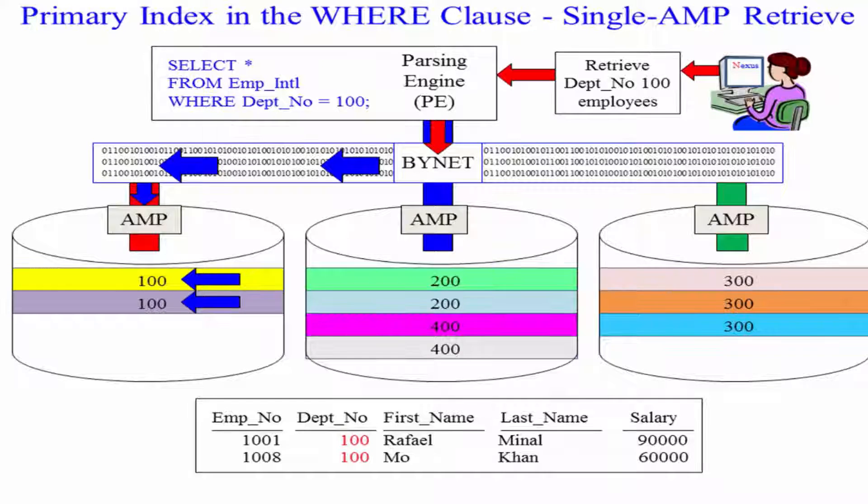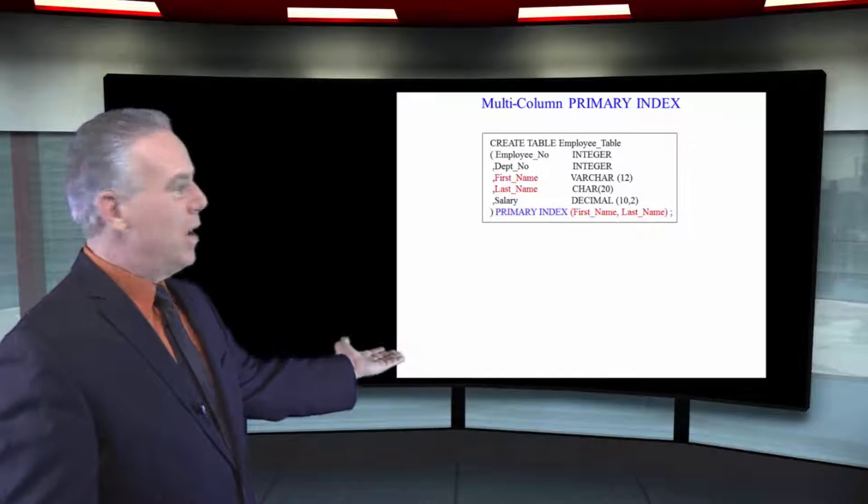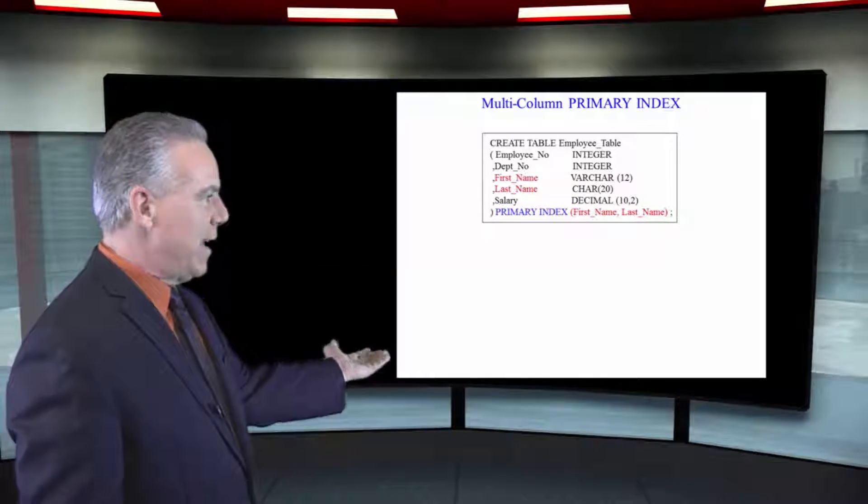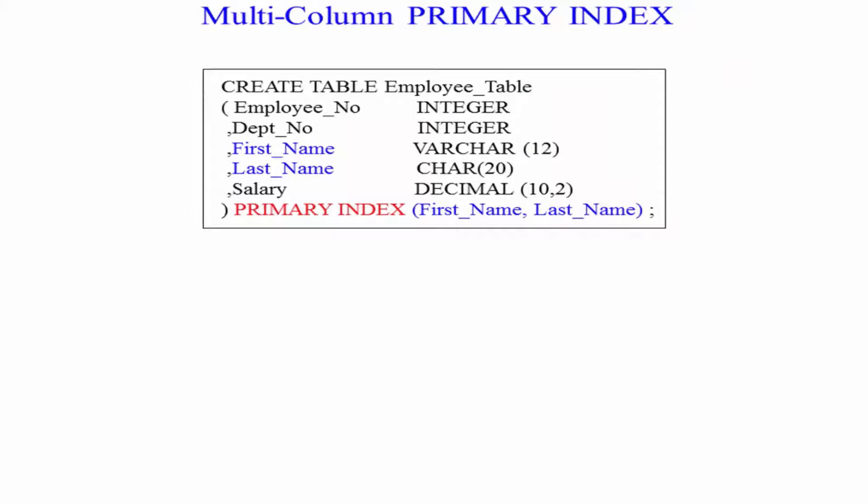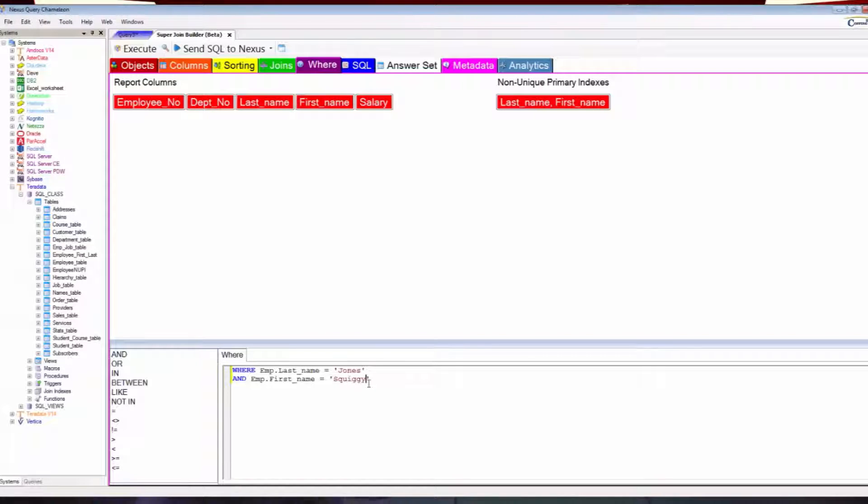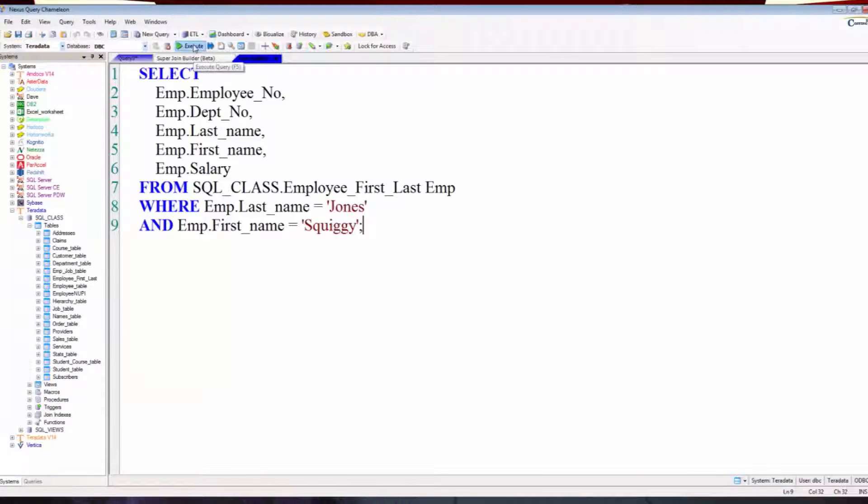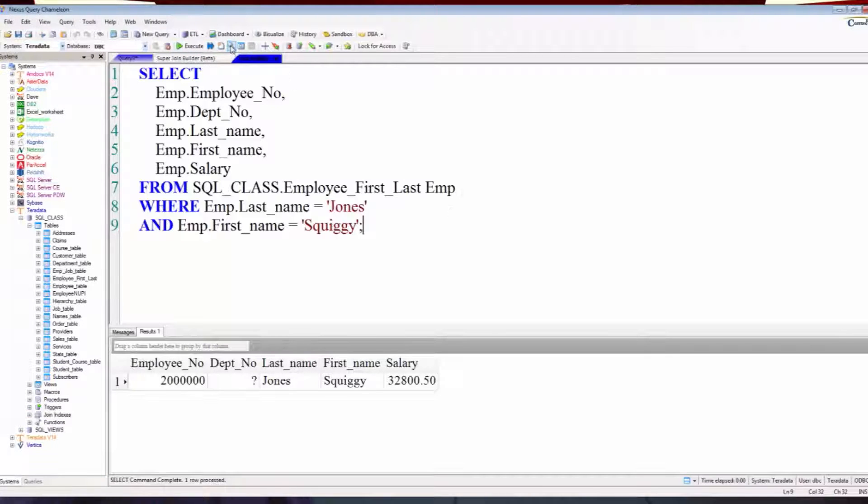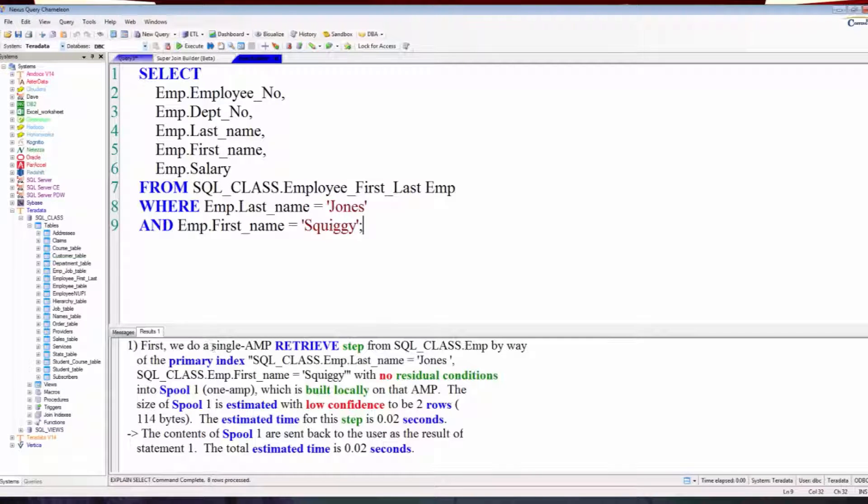In our third example, we've got a multi-column primary index, first name, last name. Is it unique or non-unique? It's a non-unique multi-column primary index. We're going to have to use both first name and last name in our SQL. If we don't, it's going to be a full table scan. If we do, single amp retrieve.